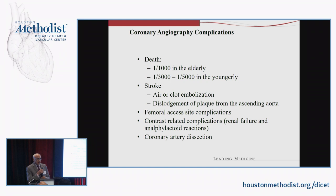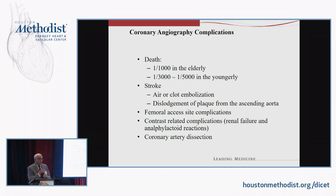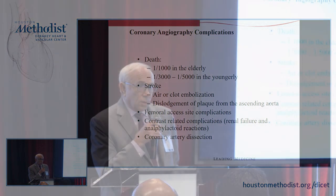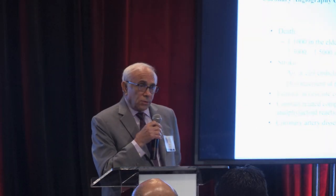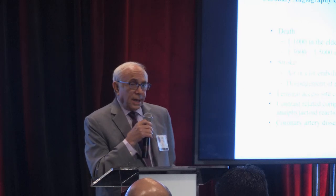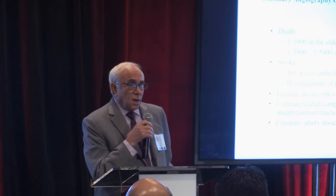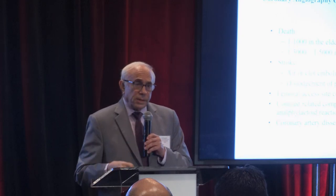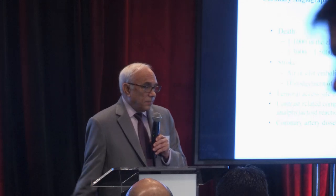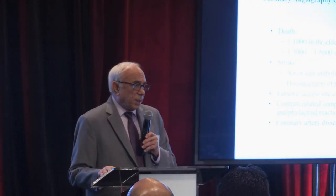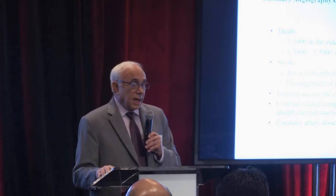Complications of coronary angiography are fairly few. It's estimated that in elderly patients, about one in 1,000 deaths will occur, usually based on severe underlying coronary disease. In younger patients, that statistic is even more impressive — no more than one in 3,000 or 5,000 will succumb in the course of a coronary angiogram. Strokes occur, usually due to mistakes by the operator, air in the catheter when catheters are changed, or clots that form on the tip of the catheter. Occasionally you get a dislodgement of plaque from the ascending aorta that causes a TIA or a stroke.